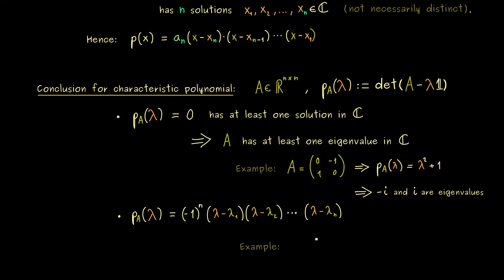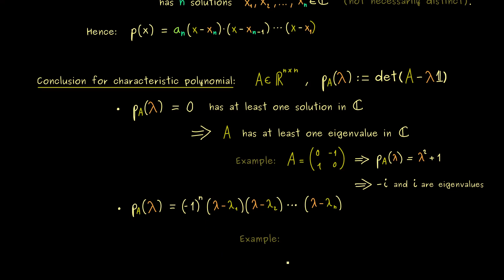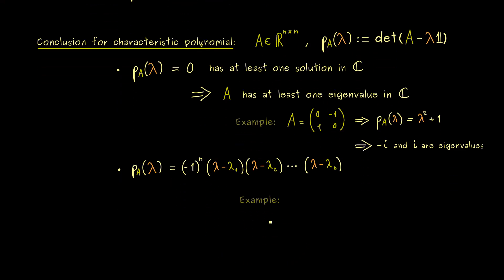Of course we know this can definitely happen so let's look at an example again. Maybe let's keep it simple and take a diagonal matrix with 1, 2, 1, 2 on the diagonal. Then the characteristic polynomial can be written as (λ - 1)(λ - 2)(λ - 1)(λ - 2).